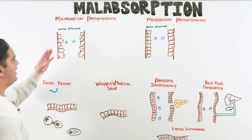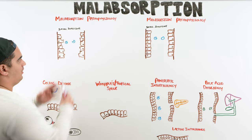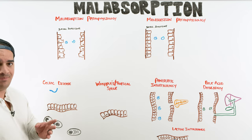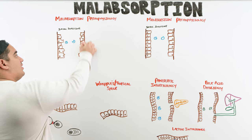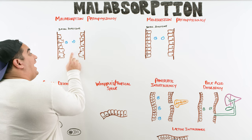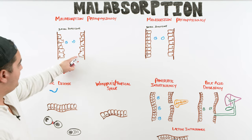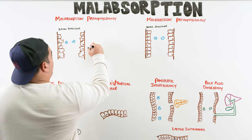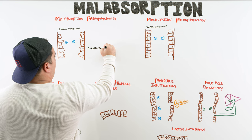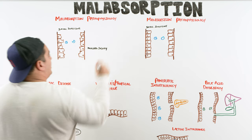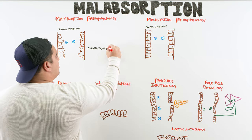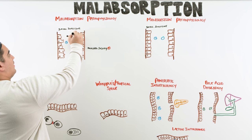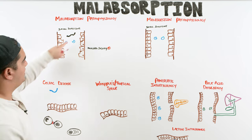For malabsorption, I'm taking a piece of the small intestine — duodenum, jejunum, ileum — and zooming in on it. The primary process here involves the mucosa: the enterocytes are responsible for aiding in digestion and allowing for absorption. In malabsorption, the mucosa is damaged — that's one really big difference — so you have what's called mucosal injury, leading to mucosal dysfunction.